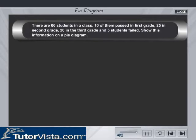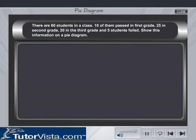Let's understand pie diagrams with an example. There are 60 students in a class. 10 of them passed in first grade, 25 in second grade, 20 in the third grade and 5 students failed. Show this information on a pie diagram.